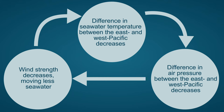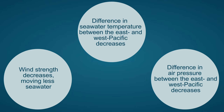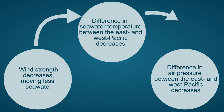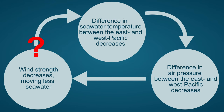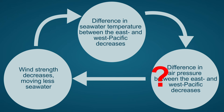In this way the wind, sea temperature, and air pressure influence each other. Although it is not known exactly where it starts, it is clear that if either the wind, the temperature of the seawater, or the air pressure changes, the other two are also affected and the weather pattern changes.